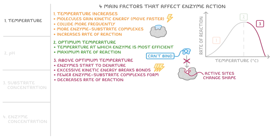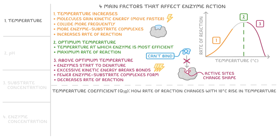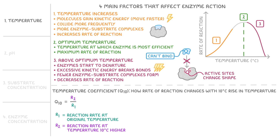We can describe the impact of temperature using something called the temperature coefficient, also known as Q10. Q10 is basically just a measure of how the rate of reaction changes with a 10 degree rise in temperature. The formula we use to calculate Q10 is Q10 equals R2 divided by R1, where R1 is the reaction rate at a temperature 10 degrees lower.